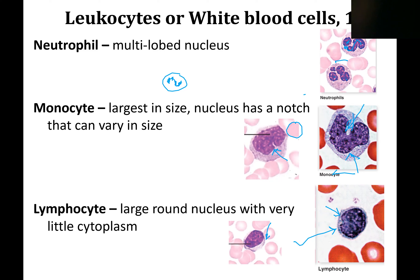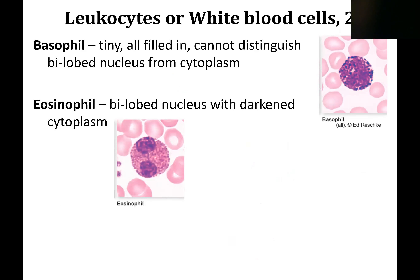The easiest ones to find when you get a slide of blood are the neutrophils and the monocytes. The hardest ones to find are the basophils and eosinophils. Basophils look like they're completely filled in — this would be the nucleus, and they have dark, large granulations in the cytoplasm. Compared to erythrocytes, you can only fit two, maybe three at most. So they're going to be really tiny and look like they're all filled in.